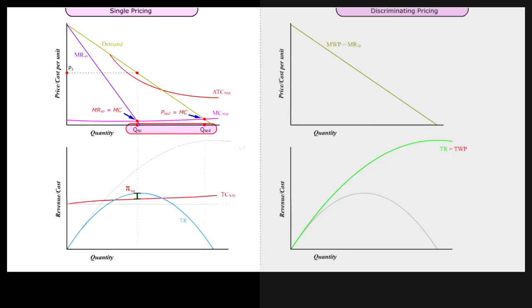Observation 3: The single pricing firm cannot produce QSP2 without incurring a substantial loss. Therefore, regulators cannot require a natural monopoly to charge a price equal to MC.